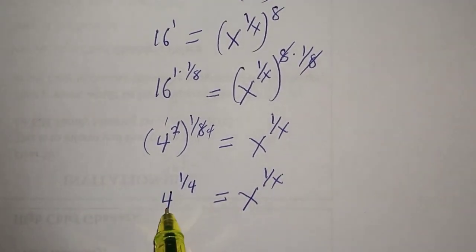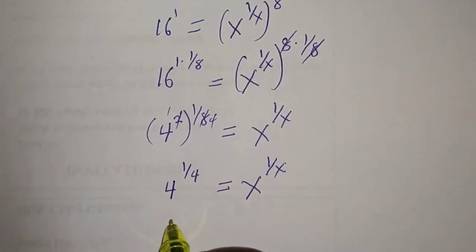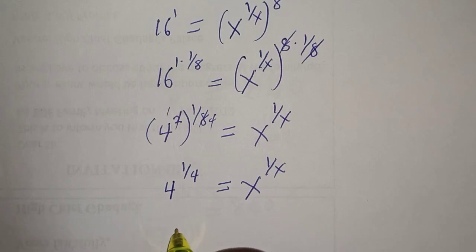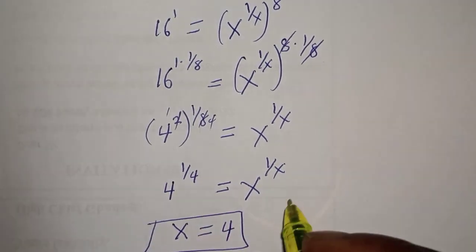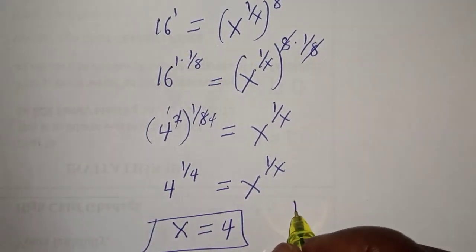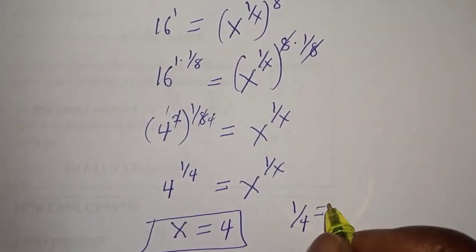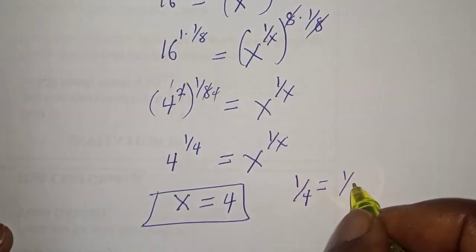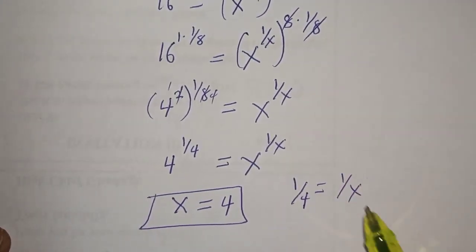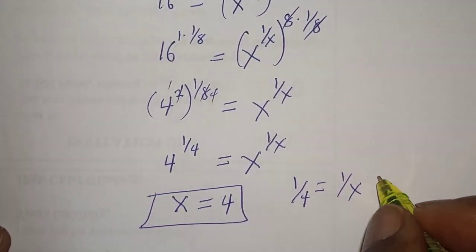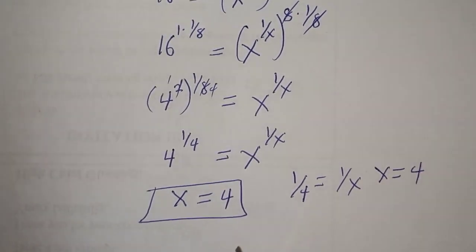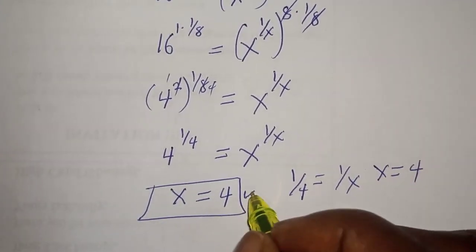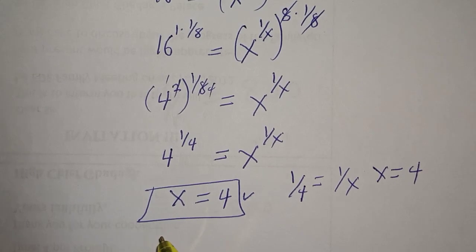From here, we can compare the base and the exponent. If you compare the base, s is equal to 4. And if you compare the exponent, 1 over 4 is equal to 1 over s. Now, if you cross multiply, s is equal to 4. Therefore, our final answer is s is equal to 4.